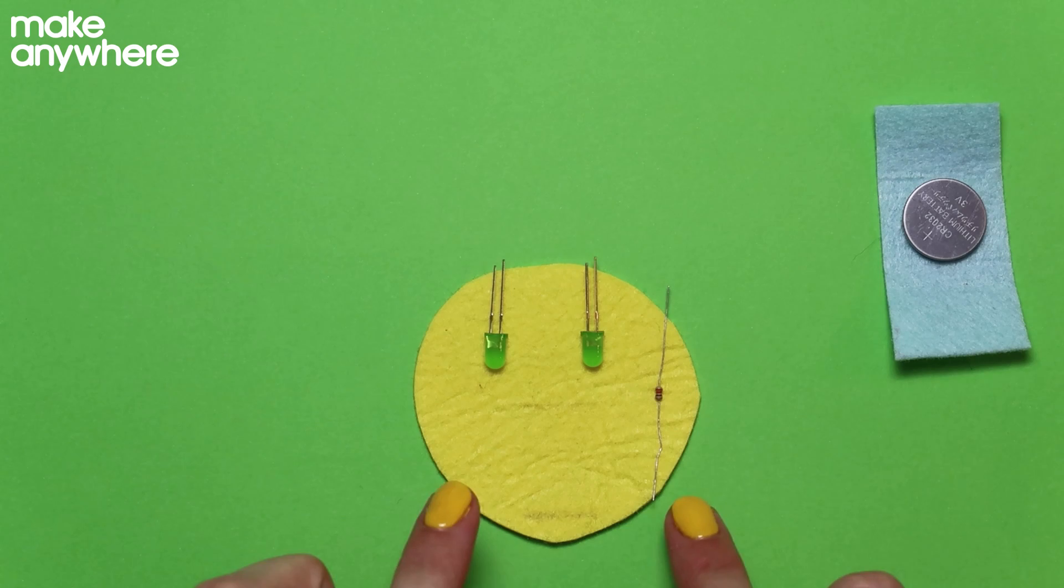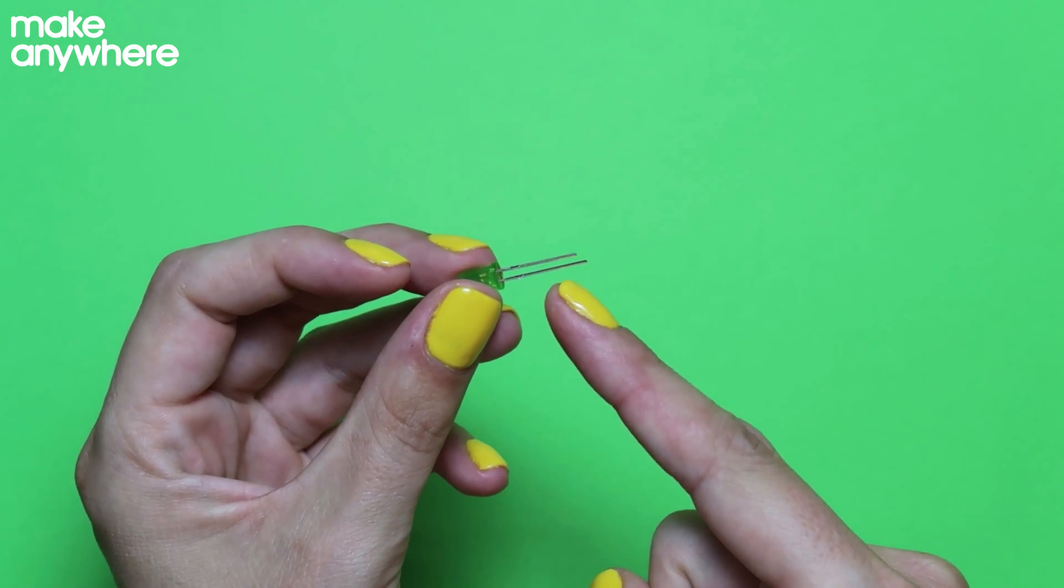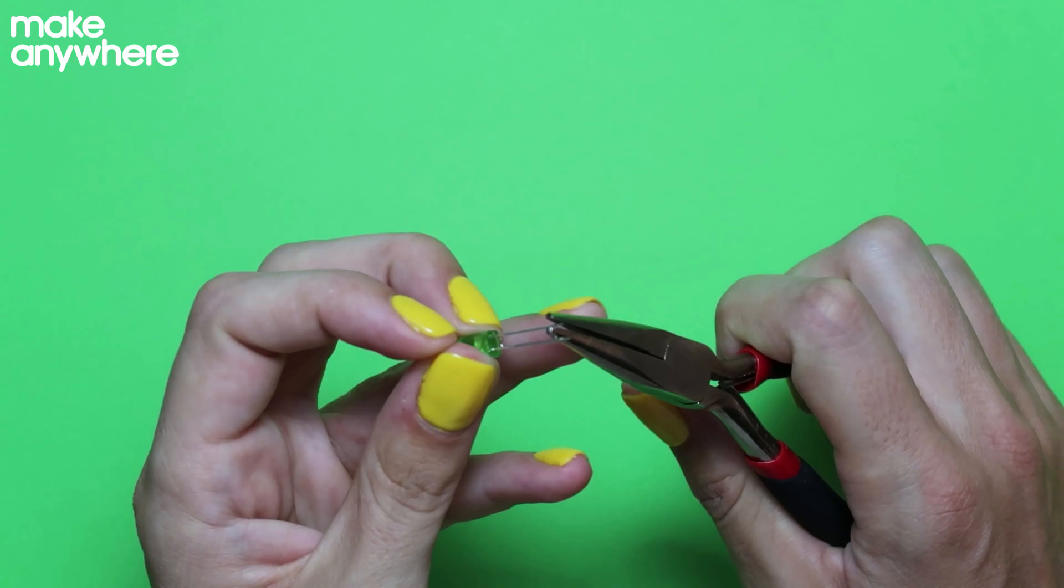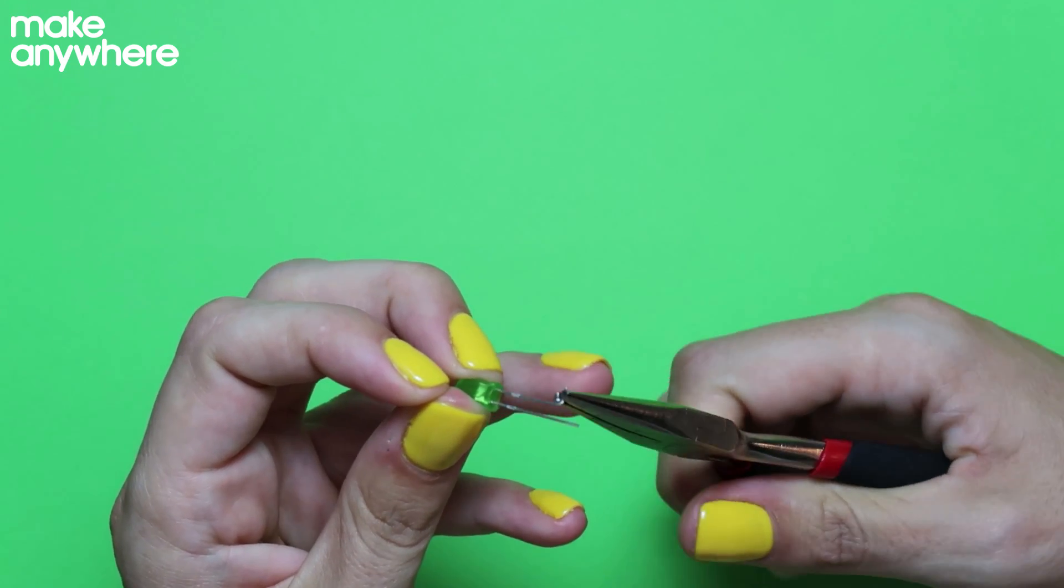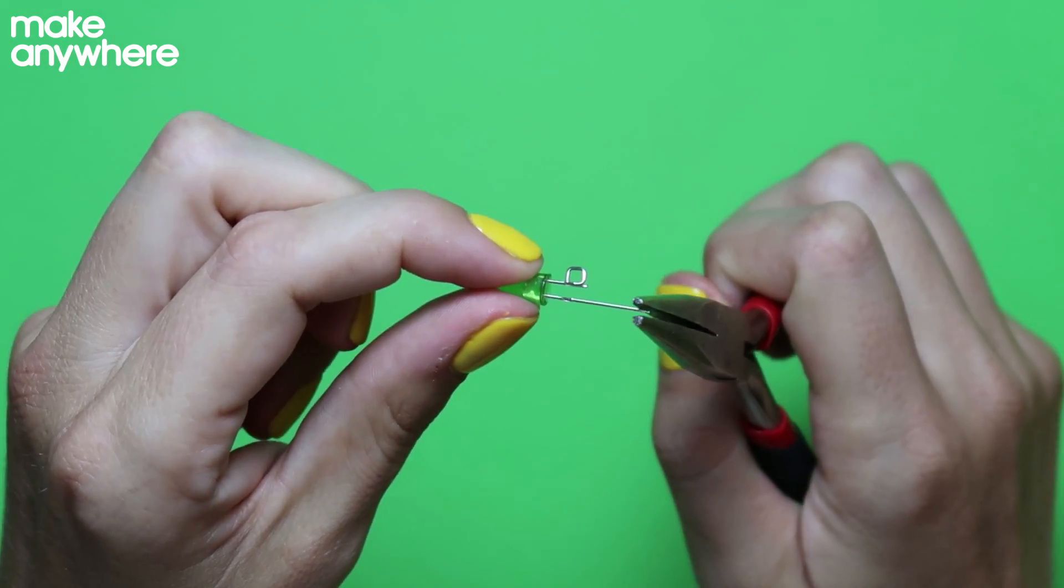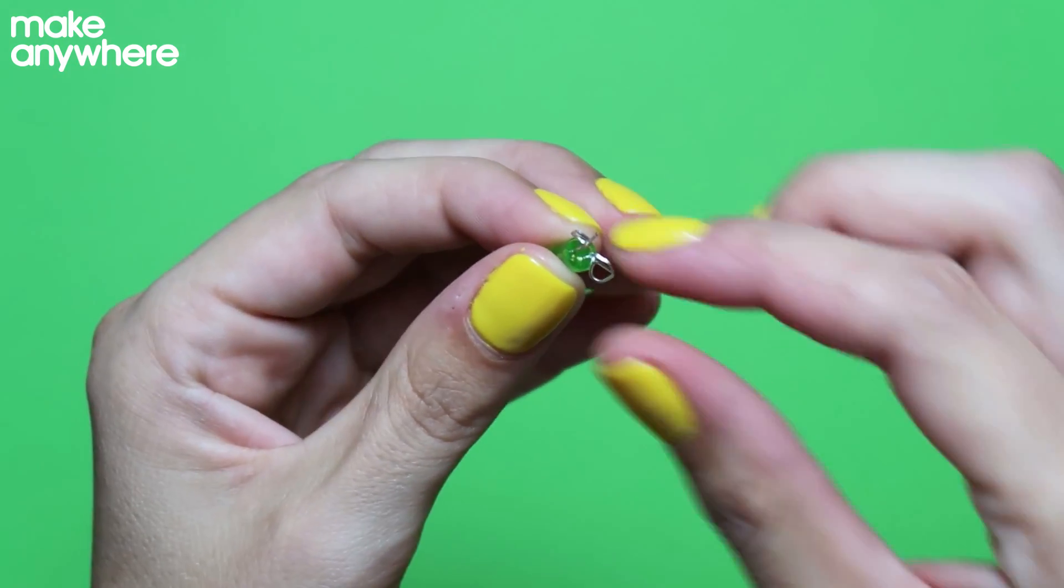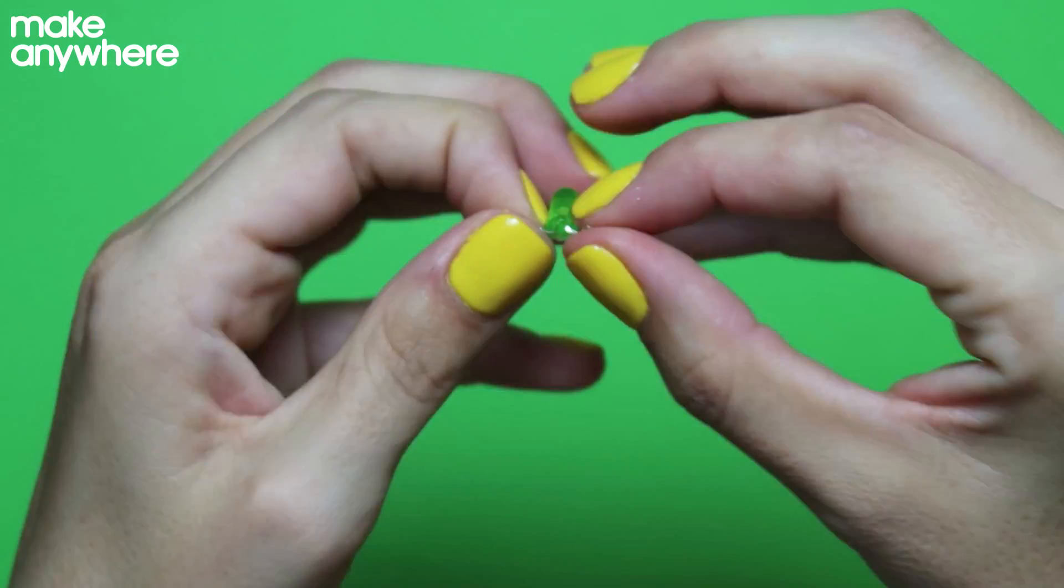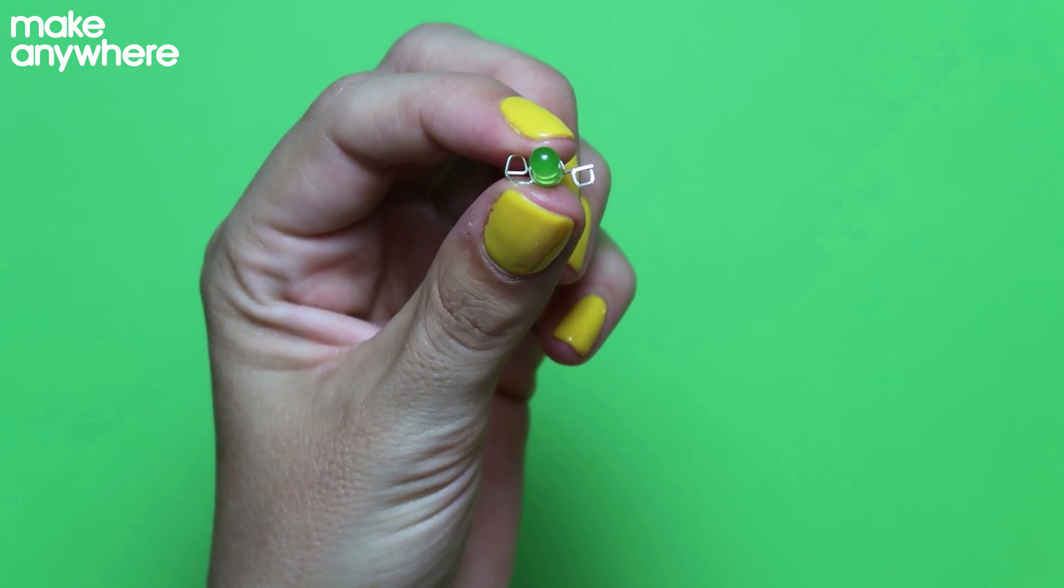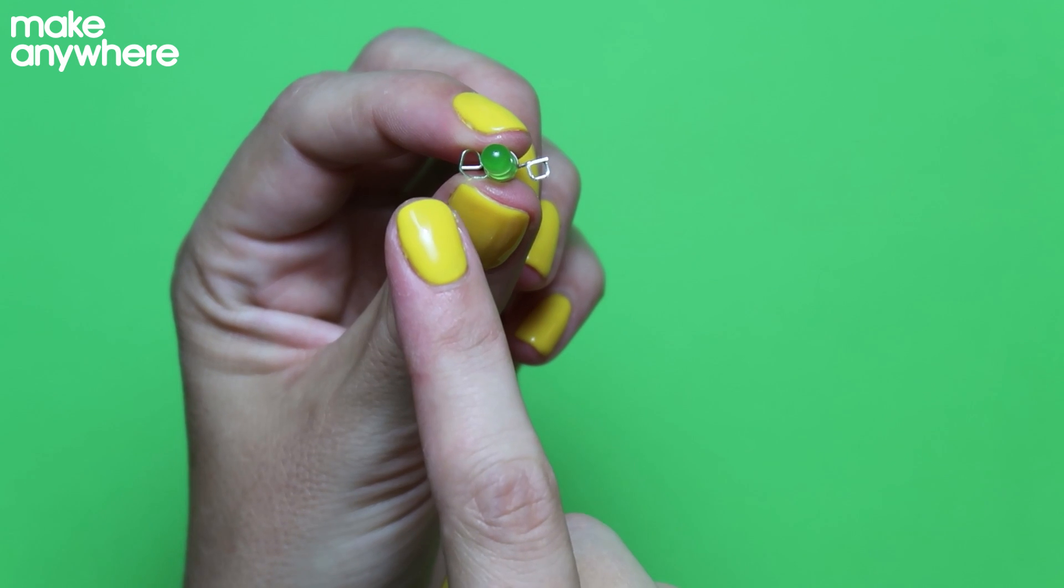First thing we need to do is get these prepared. So the short leg is the negative, the long leg is the positive. We're going to turn the short leg into a square and the long leg into a circle. When we look down, the negative side is a square and the positive side is a circle.